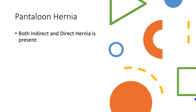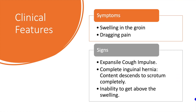Pantaloon hernia is when both direct and indirect hernias are present in the same patient. Clinical features: inguinal hernia is common in males. The patient presents with a swelling in the groin with dragging pain, and sometimes states that the swelling disappears in the supine position.